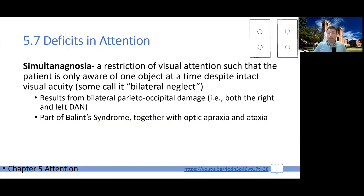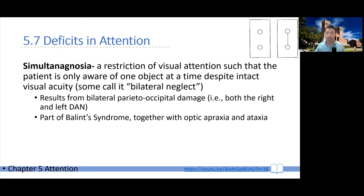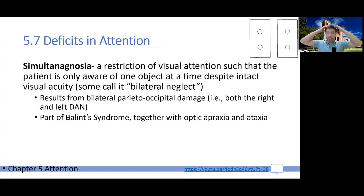Finally, the last thing I want to cover briefly is simultanagnosia. Simultanagnosia is a very rare neurological disorder characterized by the inability to perceive more than one object at a time, or at times even less than one object. Some people refer to it as bilateral neglect — there is some reason for that, though it may be a slight simplification. Essentially, you're locked into one object and that's all you can see. It typically results from bilateral damage to the parieto-occipital cortex, bilaterally destroying the dorsal attention network, so your ability to shift attention in a top-down manner is entirely gone.